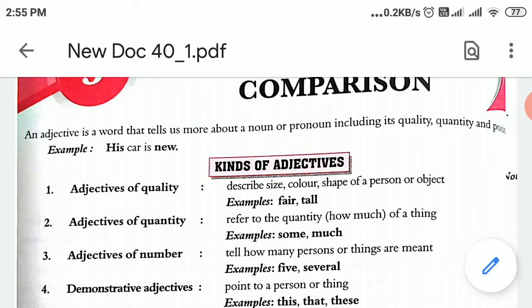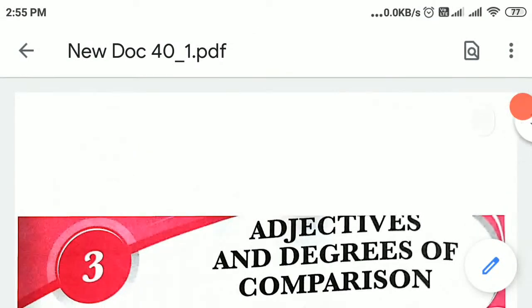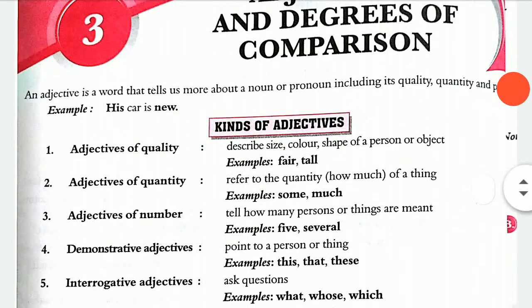Students, you have already learned about what adjectives are in your previous classes. Adjectives are words that tell us more about a noun or pronoun — that includes its quality, quantity, and position. A few examples are beautiful, ugly, far, and near.